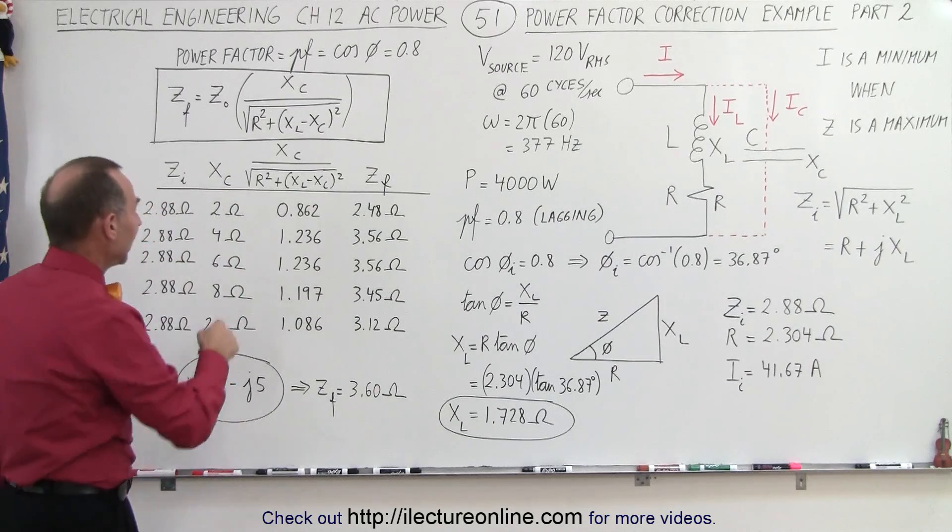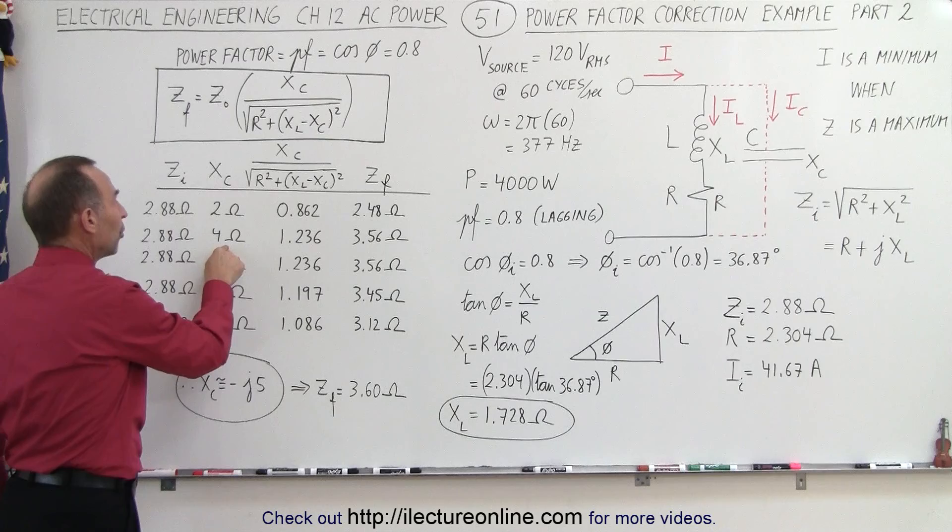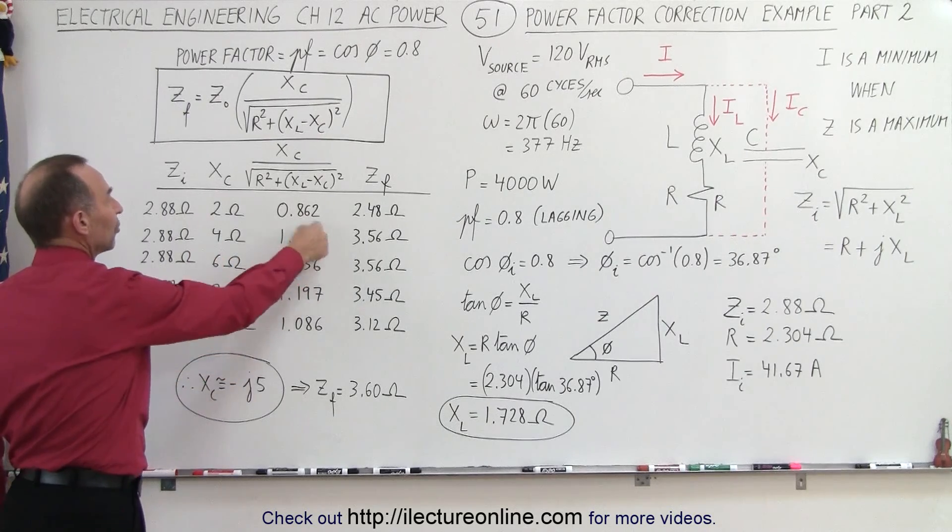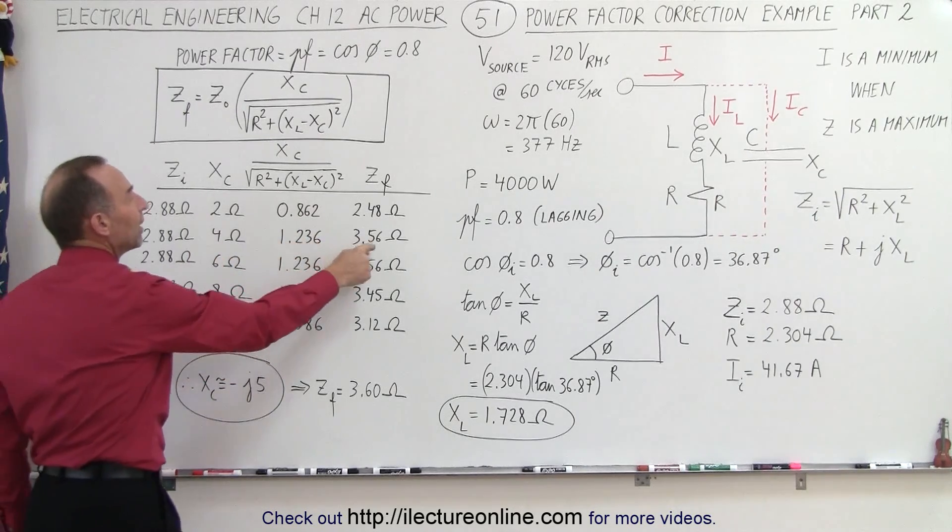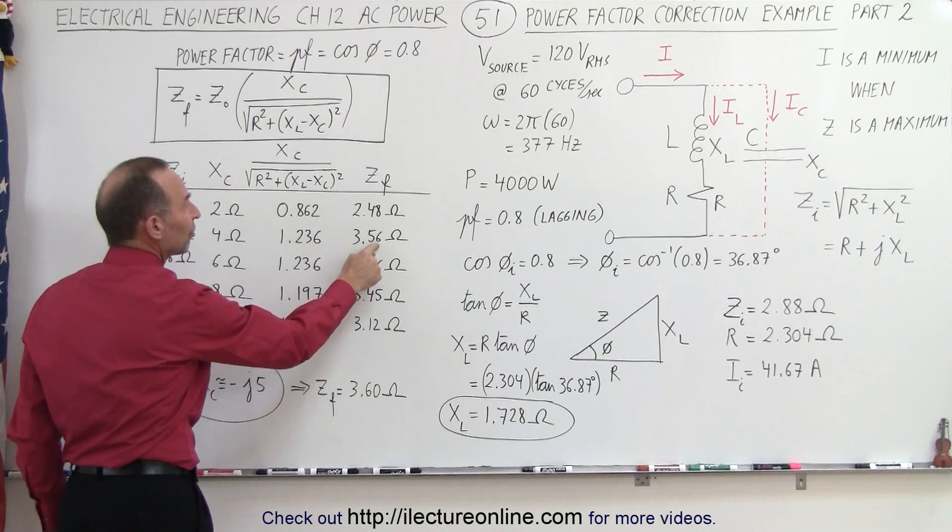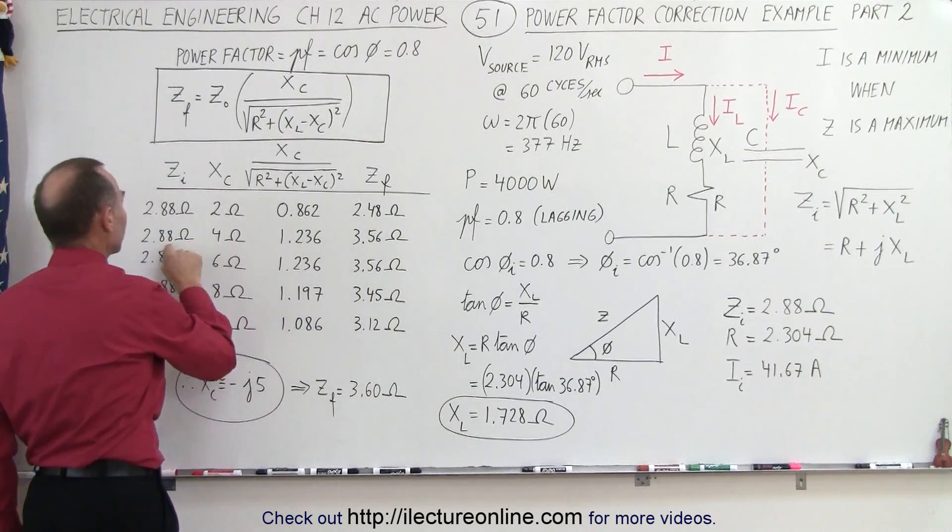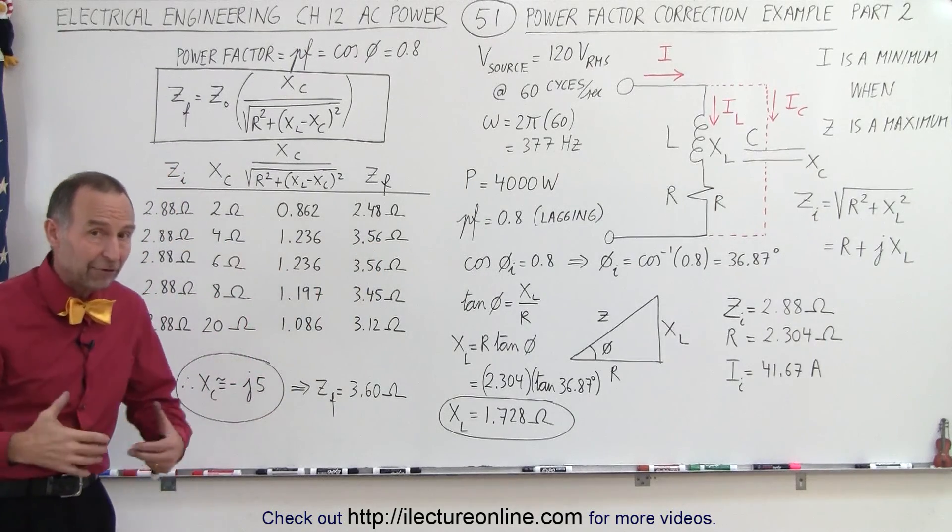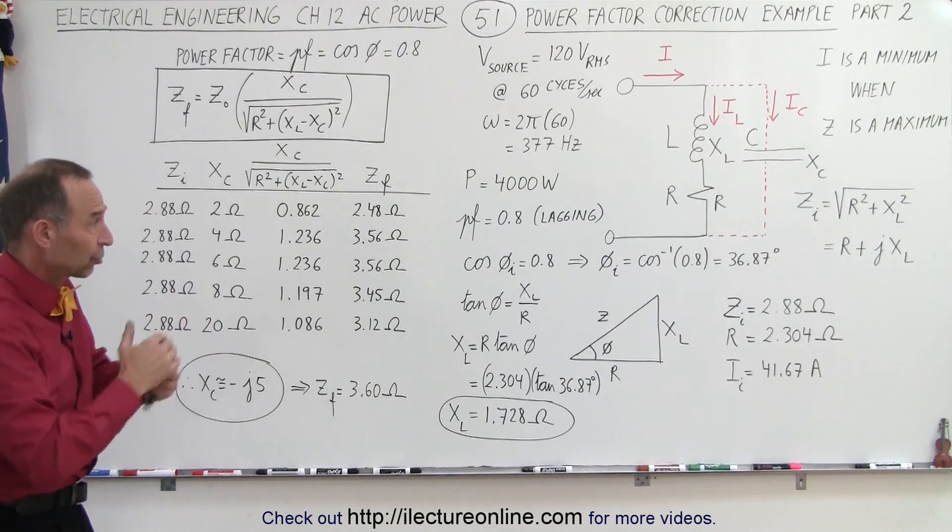But if we use a different capacitor and now we have capacitive reactance of 4 ohms, notice that now this quantity increased and we have a final impedance of 3.56 ohms, which is larger than the initial impedance. Therefore we'll have a larger power factor and less current required.